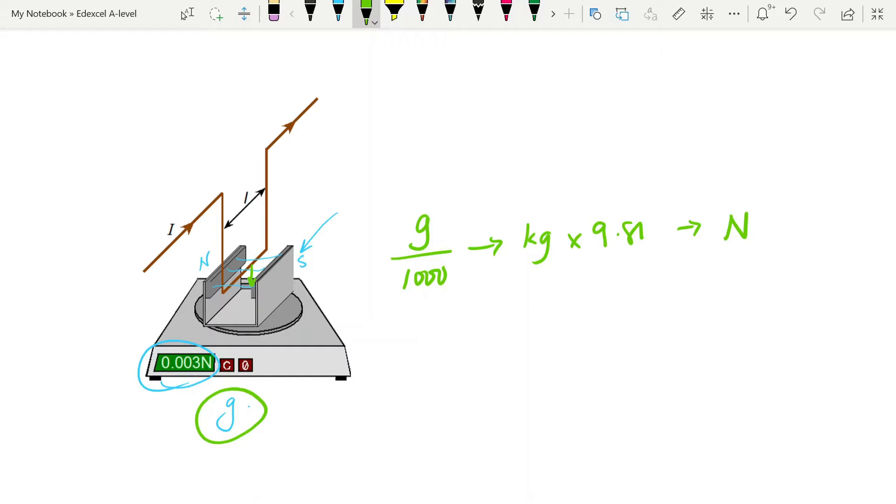Remembering that the force exerted on the wire is equal and opposite to the force the wire is exerting on the magnets. So while you're measuring the force that the wire is exerting on the magnets it will be the same magnitude for the force on the wire.